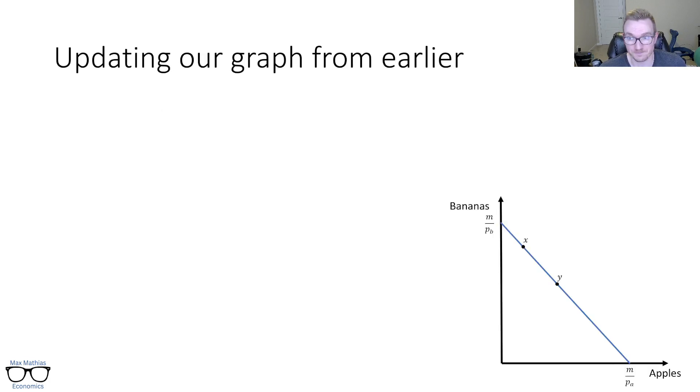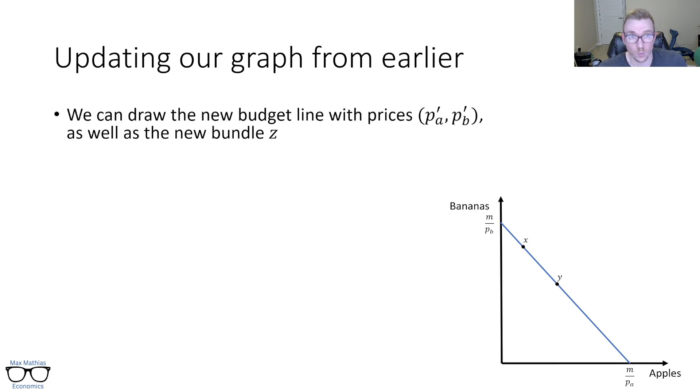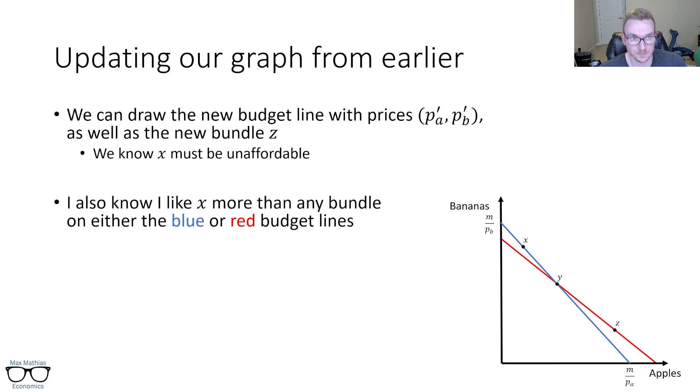So let's update our graph from earlier. So X and Y are in the exact same spots. We are going to draw the new budget line with those prices P prime A and P prime B, as well as a new bundle Z. The most important thing here is that we know X must be unaffordable and that Y must be affordable on both. So I'm going to draw it with a red line that looks like that. Notice the red budget line goes through Y in both instances, the blue and the red, because it's affordable in both. But notice with the red budget line, X isn't affordable anymore.